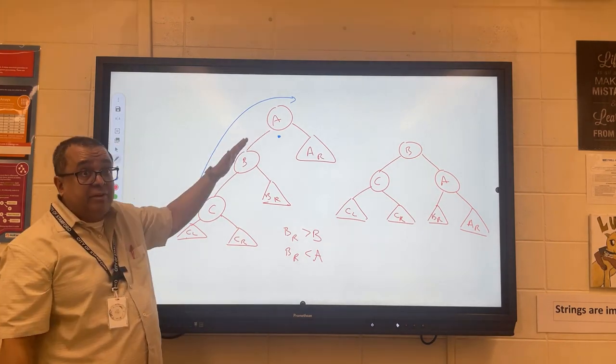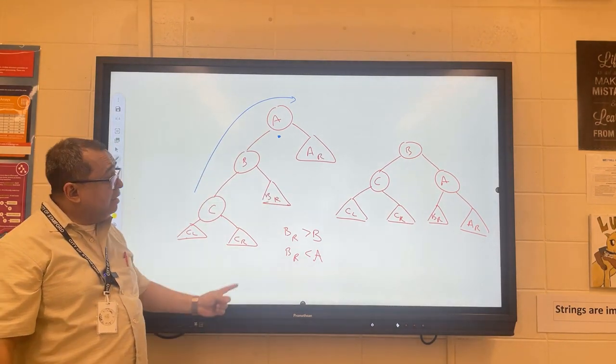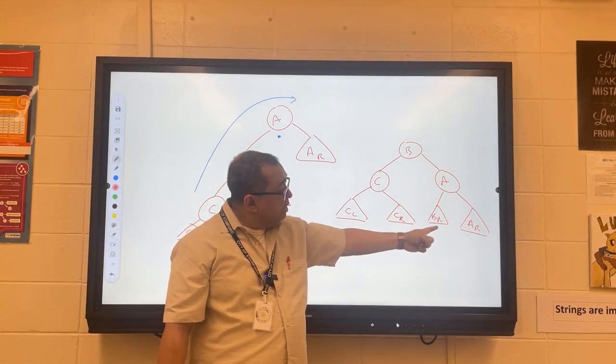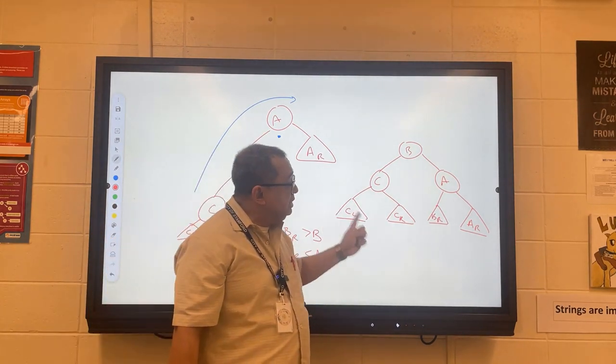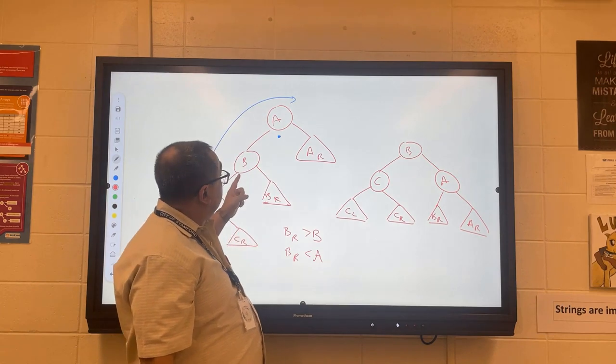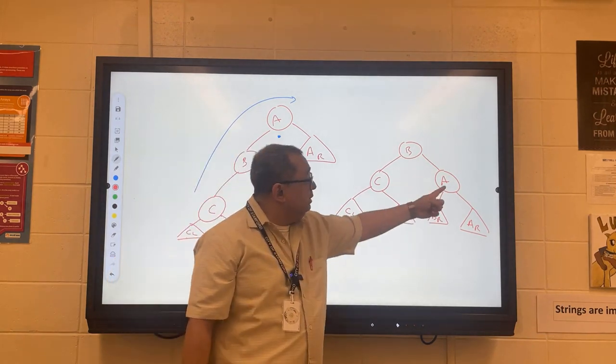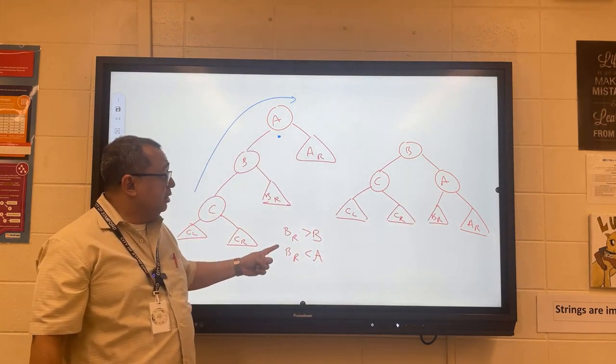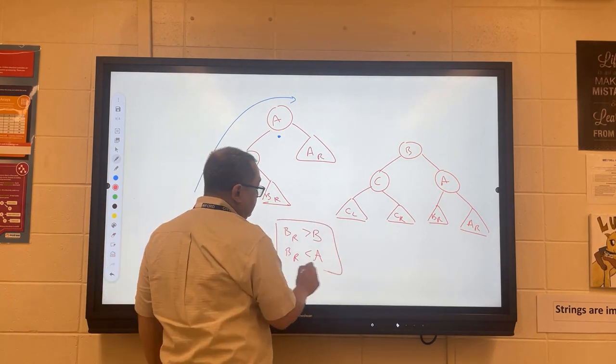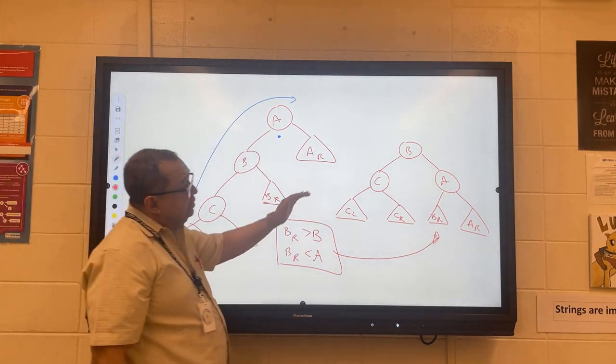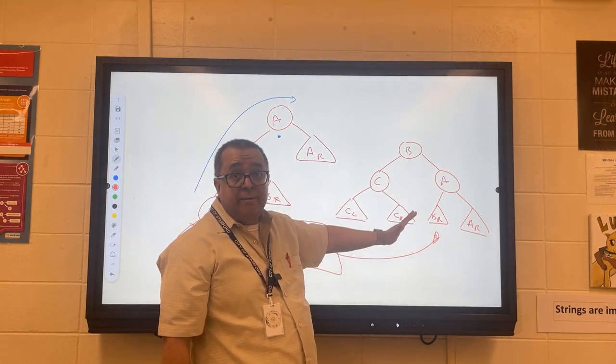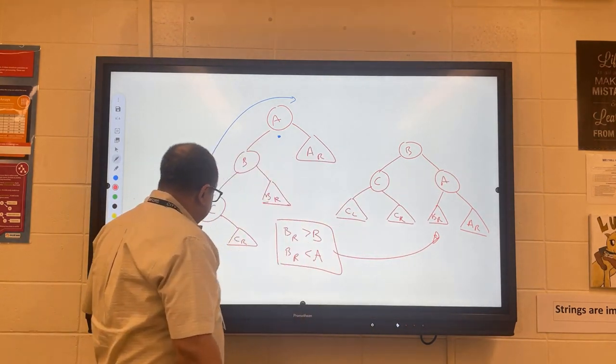You agree, right? It's to the left of A, to the right of B. Now let's look over here: are these two properties preserved when we moved B sub R from being the right subtree of B to being the left subtree of A? Take a look here and see if this is true or not. It's still to the right of B and to the left of A. You see that, right?